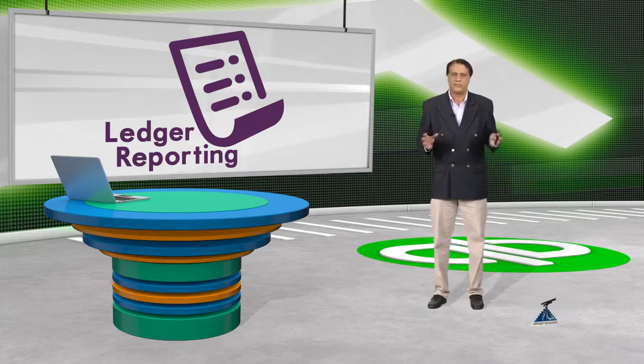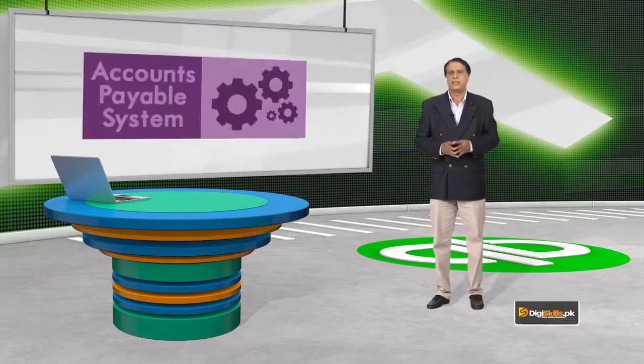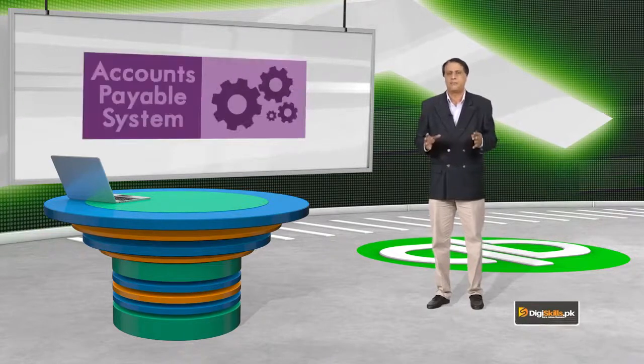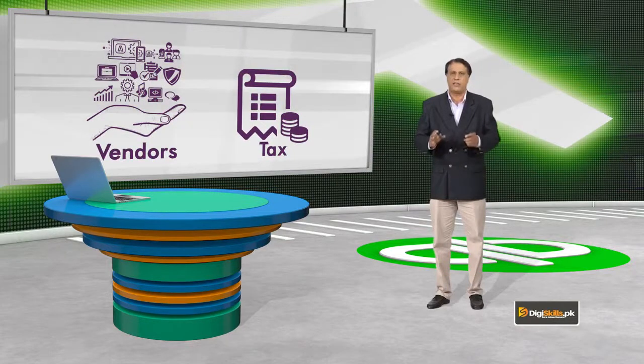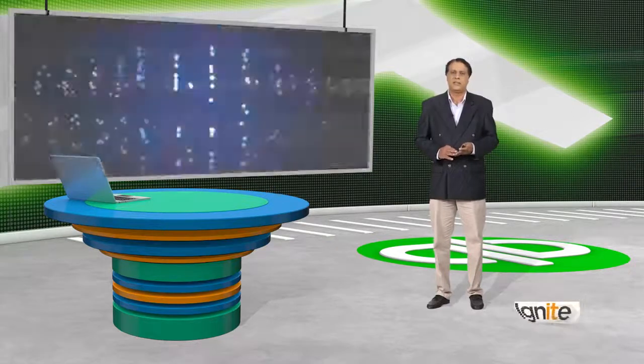इस पूरे system को जो हम define करते हैं, इसे accounts payable system कहा जाता है, जिसमें तमाम vendors का individual record मौजूद होता है, tax की details मौजूद होती हैं, कितना tax treasury में जमा कराया वो मौजूद होता है, और tax receipt या challan के numbers भी होते हैं जो हमें legally अपने vendors को फراहम करने होते हैं.